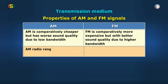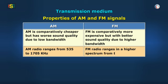AM radio ranges from 535 to 1705 kHz. FM radio ranges in a higher spectrum from 88 to 108 MHz.